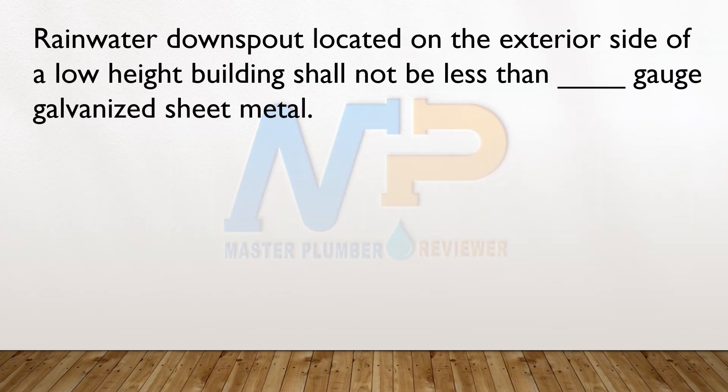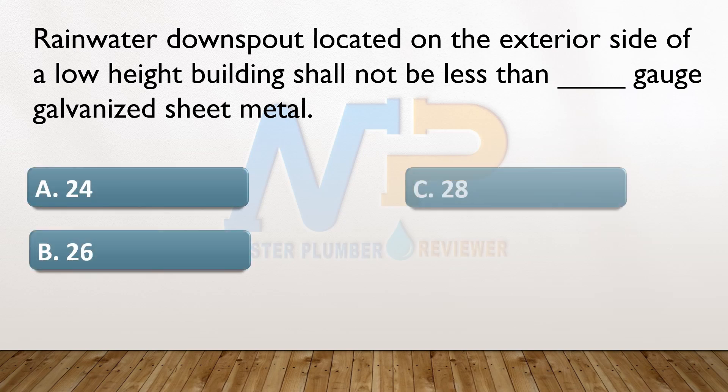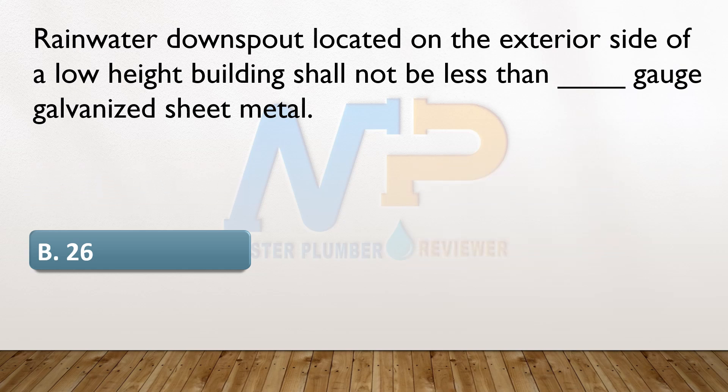Rainwater downspout located on the exterior side of a low height building shall not be less than blank gauge galvanized sheet metal. A. 24. B. 26. C. 28. D. 30. The answer: B. 26.